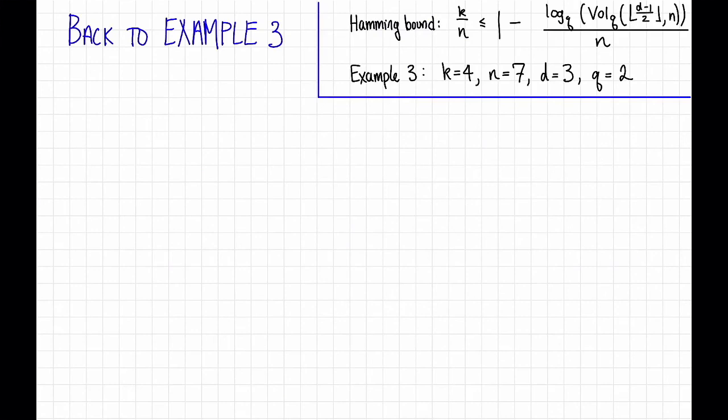To see the Hamming bound in action let's return to example three from the previous video. This was the code with the circles, it's also called the Hamming code. So here I've copied over the Hamming bound that we got on the previous slide and I've also recorded the parameters that we had from that example three.